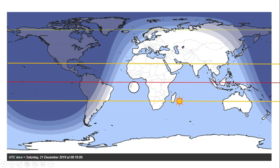You can see there are different stages of twilight: civil twilight, nautical twilight, and astronomical twilight. So if you're in this area near the Arctic Circle, you're going to have some twilight, but no sunrise or sunset on that day.